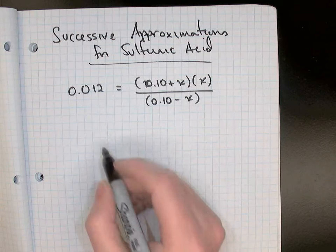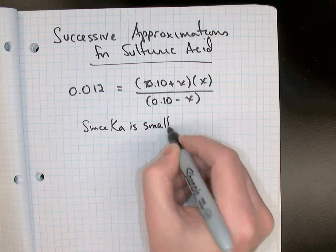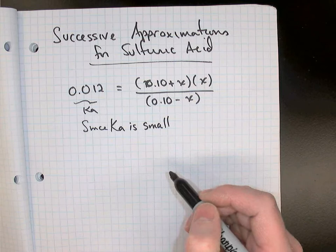How do we solve this without the graphing calculator using the solver? The successive approximations approach. The approach is similar to what we did before. We'll start by saying since the Ka is small, 0.012 is our Ka value and it's not a large Ka, so since it's small we will assume that X is much less than in this case 0.10.